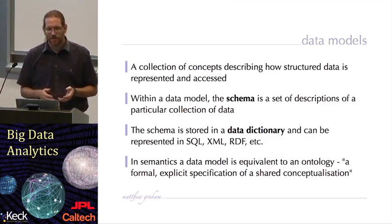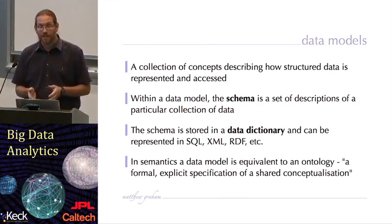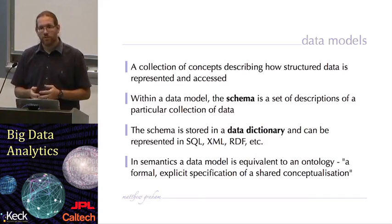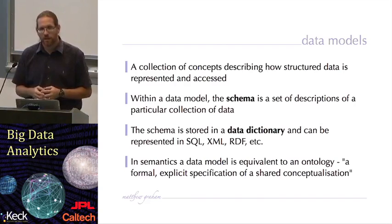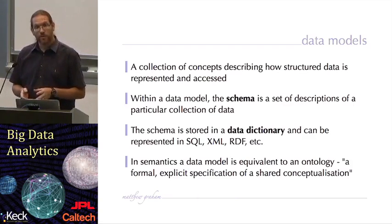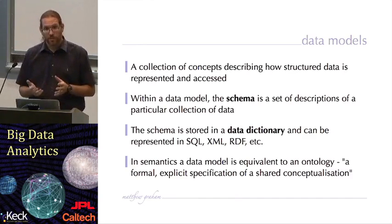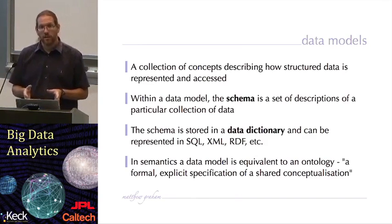The schema is stored in a data dictionary, and that can be represented in a number of different technologies. It can be represented in SQL for relational databases, in XML for XML databases, in RDF for triple stores and ontological databases. And in semantics, which is the knowledge management layer in the pyramid that we saw in module one — that third layer up — a data model is equivalent to an ontology. We'll mention this a bit in module six. An ontology is a formal explicit specification of a shared conceptualization; it's essentially a schema for a knowledge map.